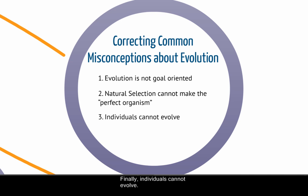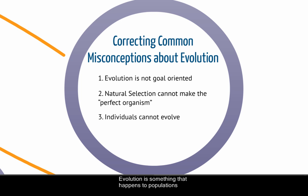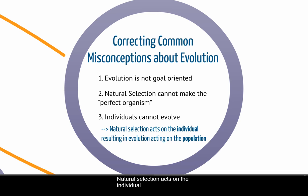Individuals cannot evolve. We use the term evolution in everyday language — you're evolving as a student or as a human being — but that's different from biological evolution. My gene frequencies can't change. Evolution is something that happens to populations, not to individuals. Natural selection acts on the individual, determining which individuals have more or fewer babies, and that results in evolution acting on the population overall.